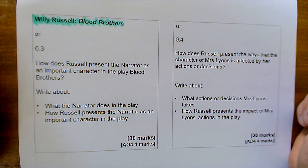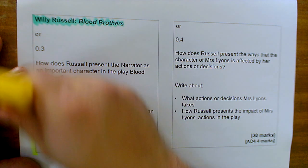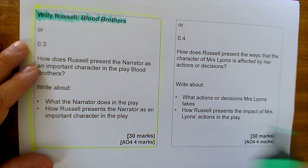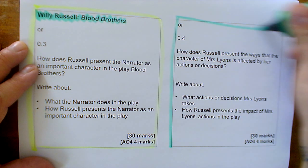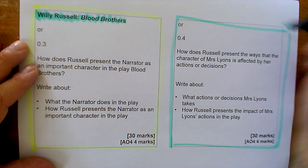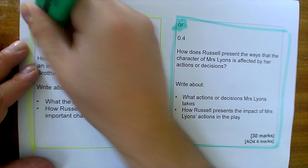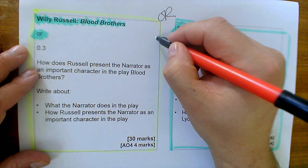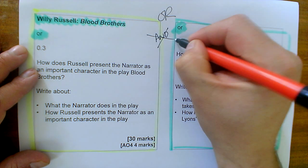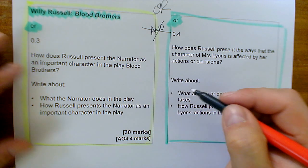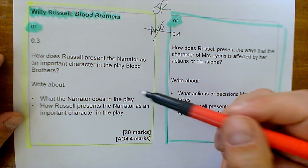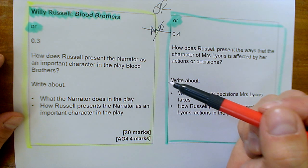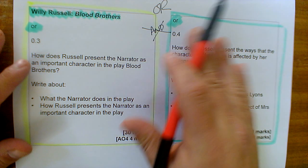As I mentioned in the previous video, you will be presented with a choice of questions — two questions in the Blood Brothers section — and this very small word at the top is very, very important. It says OR. It does not say AND. That means you have to look at both questions and make an informed decision as to which one you feel most confident in answering. That's going to take you a little bit of time.